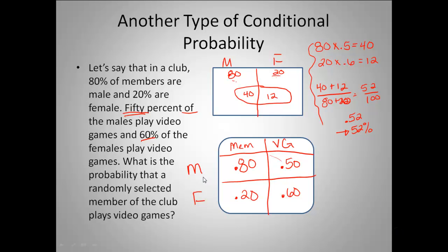Now I'll add labels. Males will be called A1 and females will be event A2. Playing a video game is event B. The 80% is the probability of A1; the 20% is the probability of A2. The 0.5 is the conditional probability of B given A1 — being male and playing a video game. And 0.6 is the conditional probability of B given A2 — being female and playing a video game.